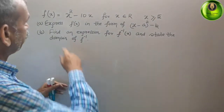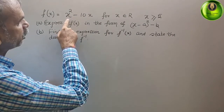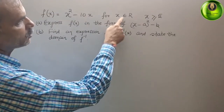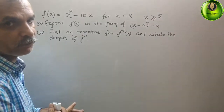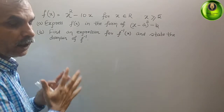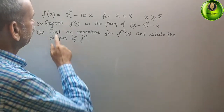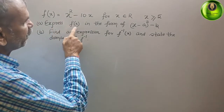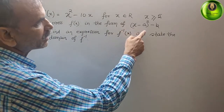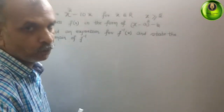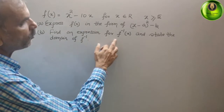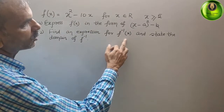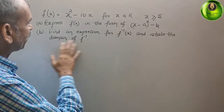The question is: f(x) is equal to x squared minus 10x, for x belongs to R, x is greater than or equal to 5. They ask to express f(x) in the form of (x minus a) whole square minus b. Next, find an expression for f inverse of x and state the domain of f inverse.